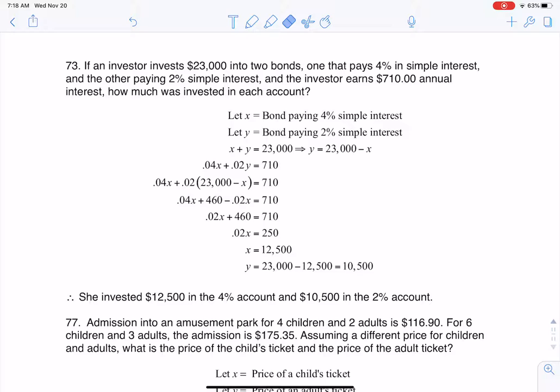So as we look through this problem, it says an investor has $23,000 to put into two bonds, and one's going to give you 4% interest and the other is going to pay 2% interest. And you're going to get $710 in this one year, so how much should you put into each of the two accounts?